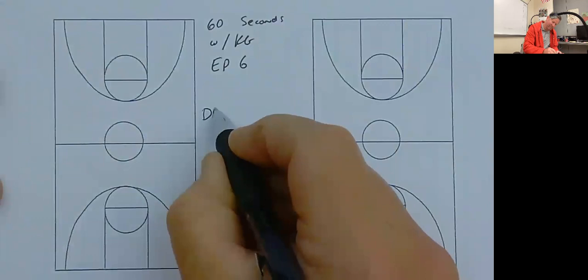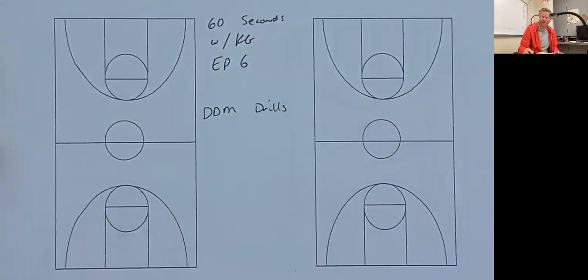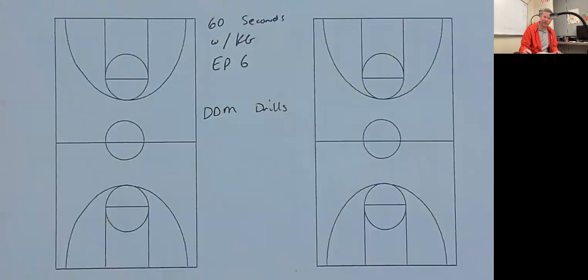In episode 4, I went over my favorite 4-on-3 paint touch game. In episode 5, I went through the version of our 1-on-1 attack and our 4-on-4 cutthroat rules. And today I'm going to go through some full court stuff that I really like that can really develop some of your players in a dribble drive motion style offense.